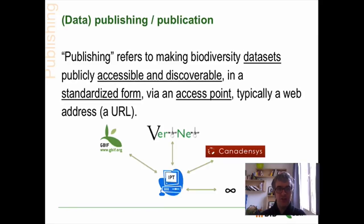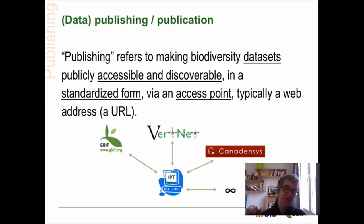A short definition: data publishing or data publication refers to making our biodiversity datasets publicly accessible but also discoverable in standardized form via an access point, which is typically a web address. An important point here is the standardized form. We will use standards to ensure that different systems and different databases have a common language to communicate together.